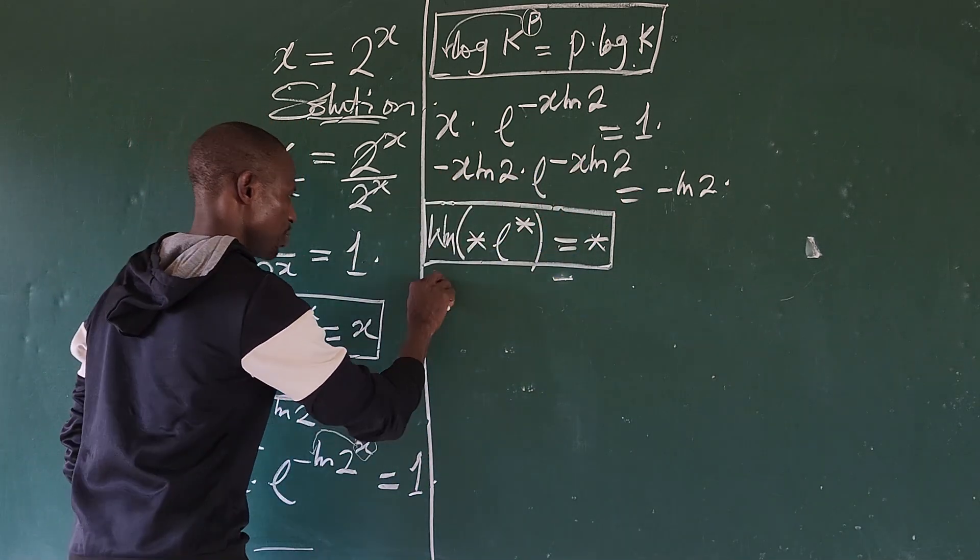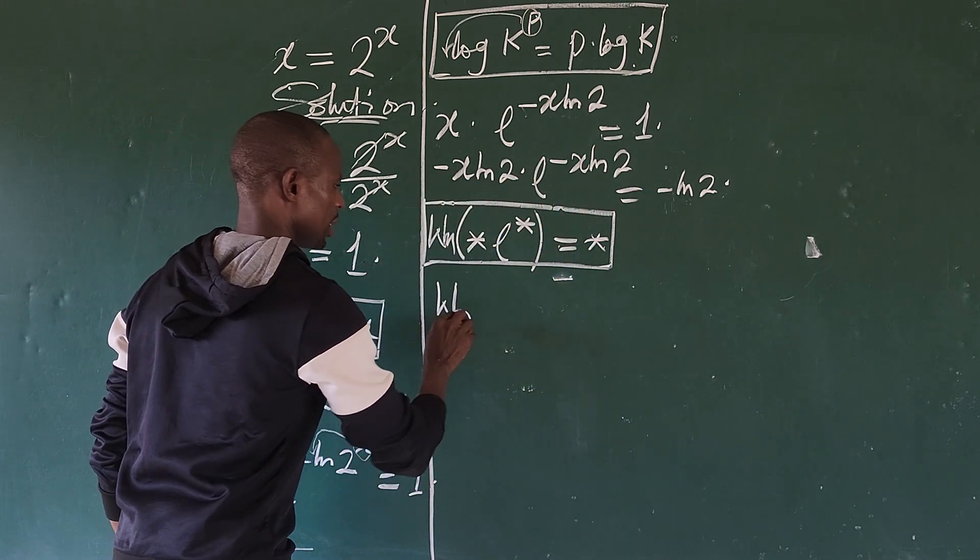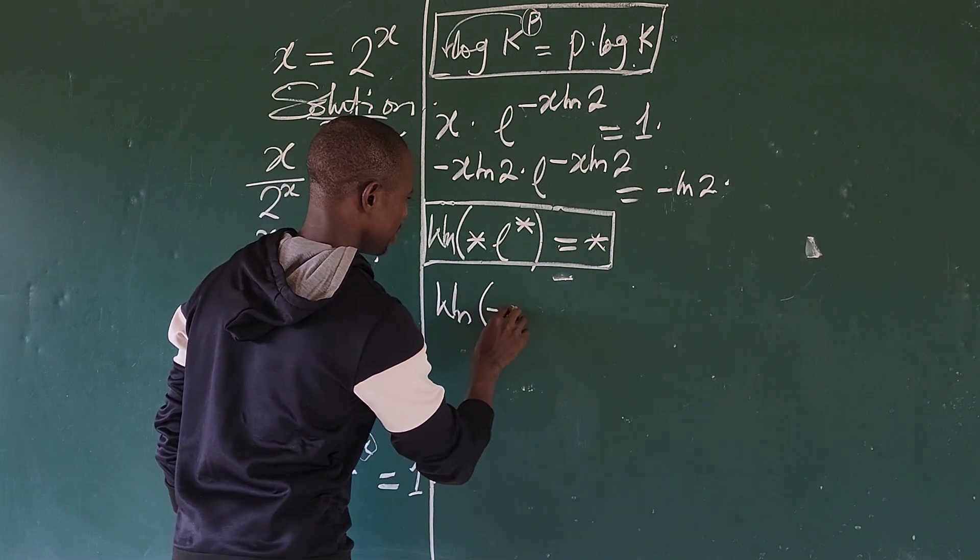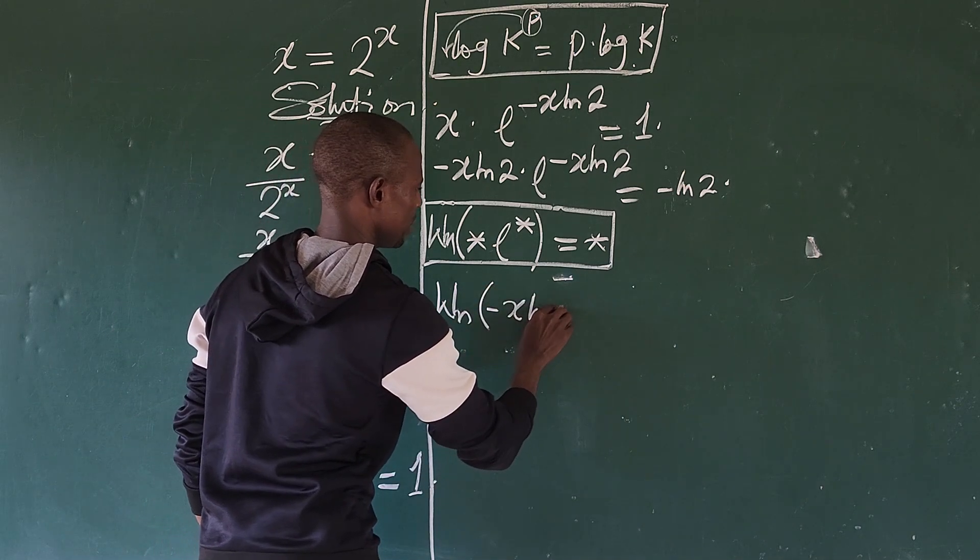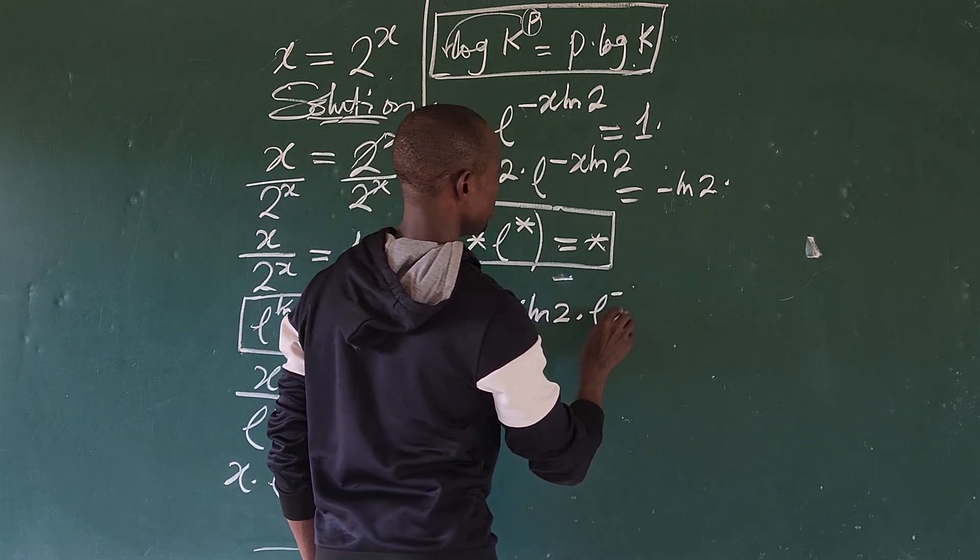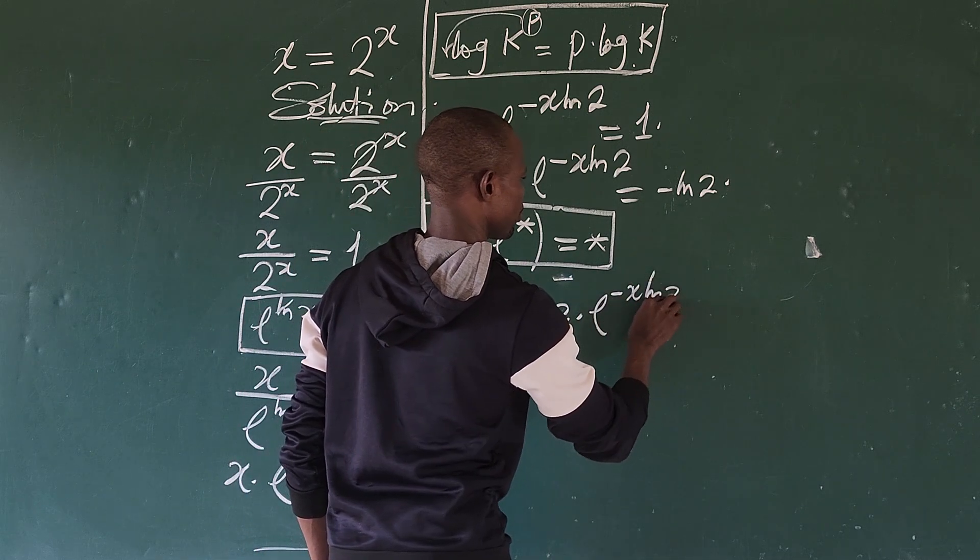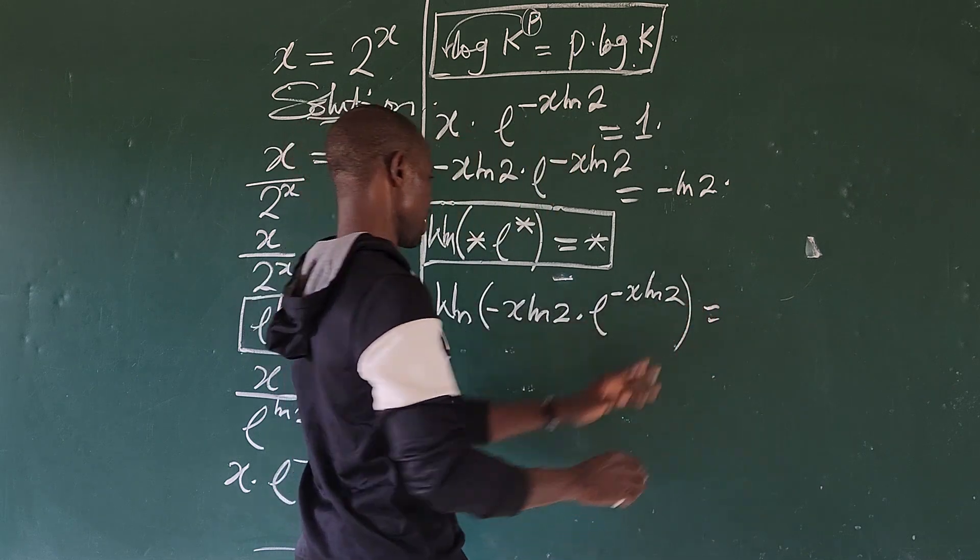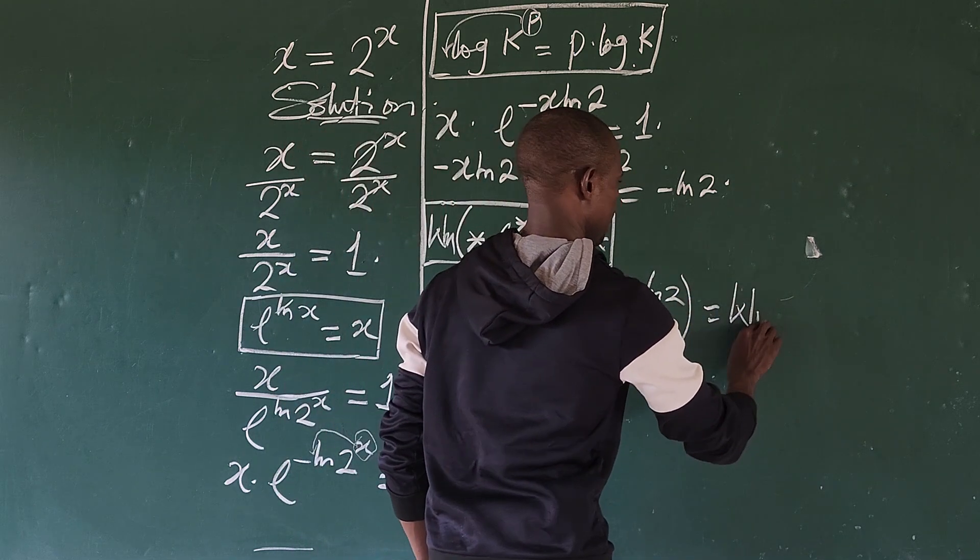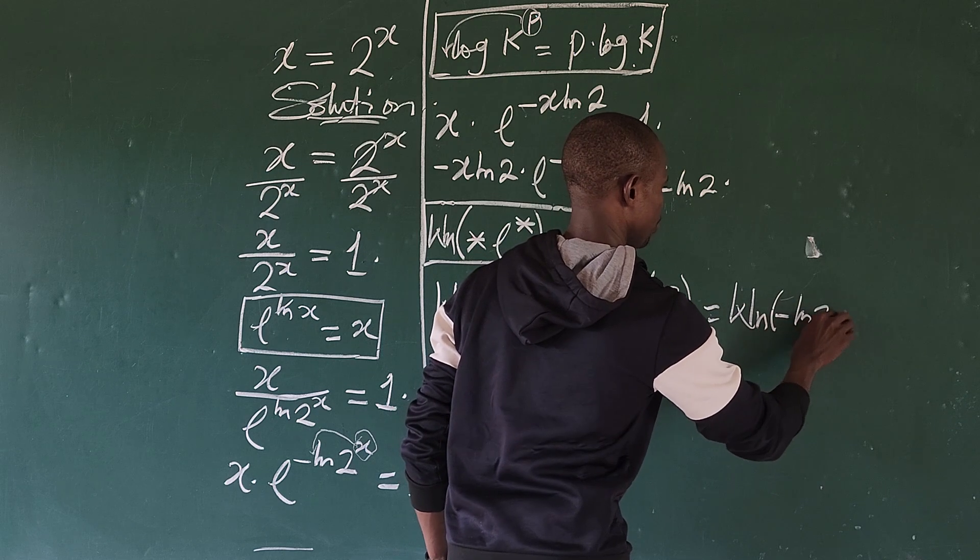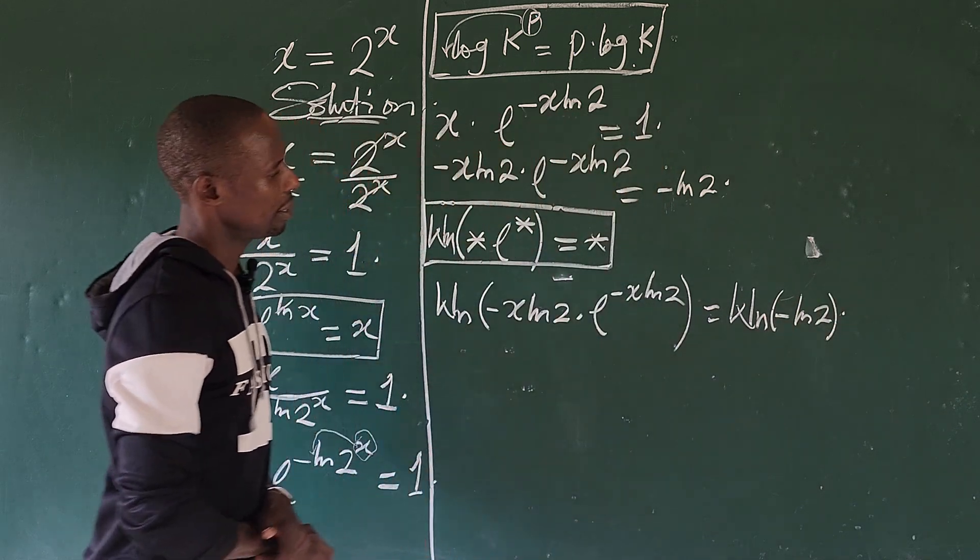What we do here now, we are going to evoke that into this expression. So this will now give us Lambert W of minus x ln of 2 times e to the power of minus x ln of 2 equal to, we do same here, so we have here Lambert W of minus ln of 2.